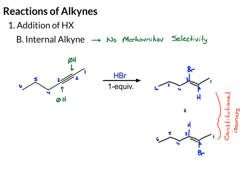If you were to use an excess of HBr, each of these alkene products would react further with HBr. With Markovnikov selectivity now applying to the double bond, you would get the second hydrogen and second Br added — but since both constitutional isomers react, you'd end up with multiple products.